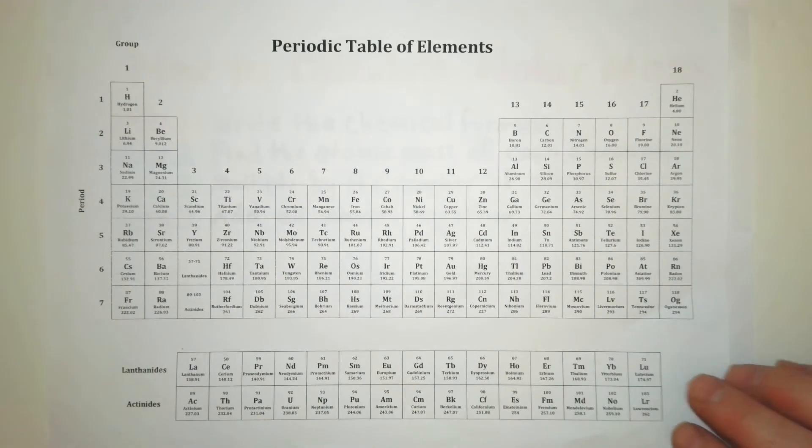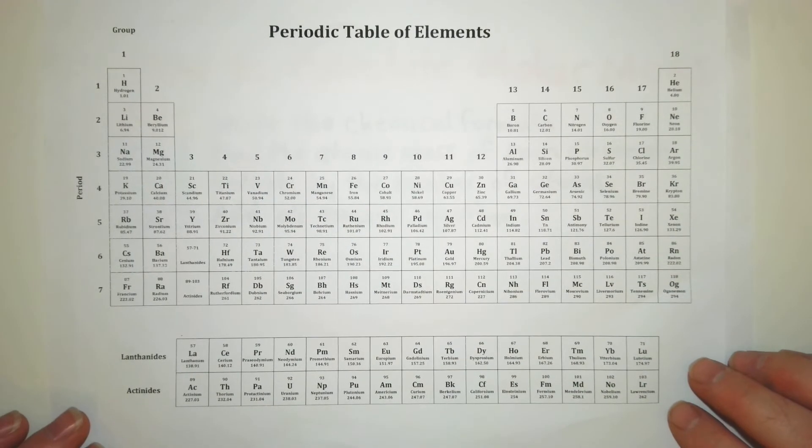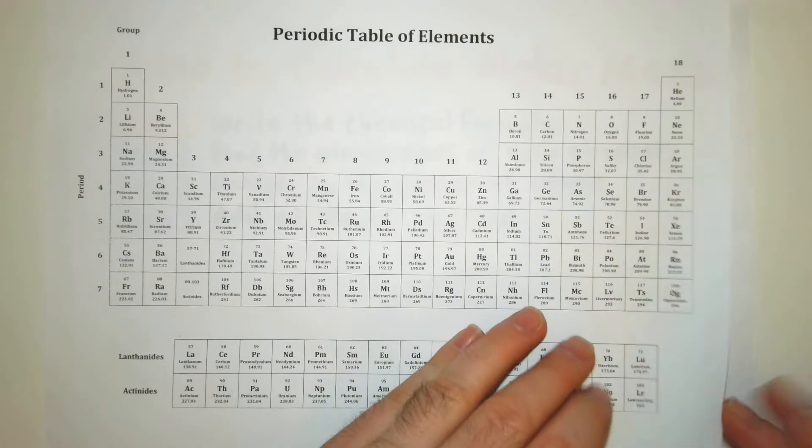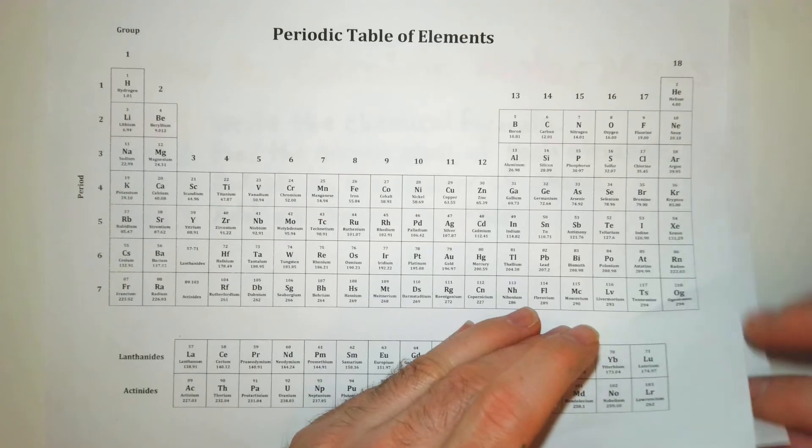Now to do this you're going to need a periodic table to get the atomic masses of each element and I recommend a calculator to prevent some simple mistakes.